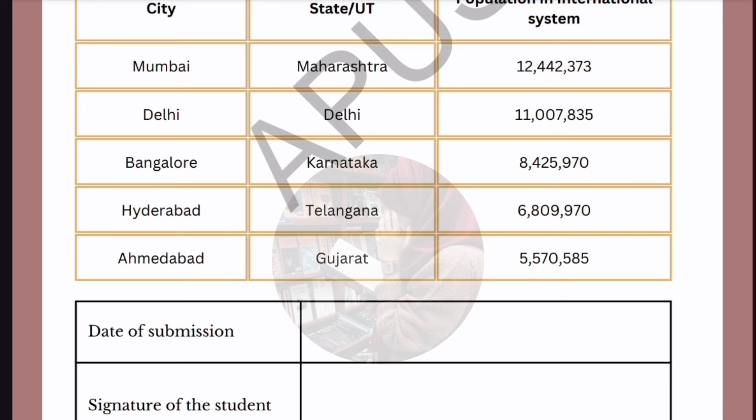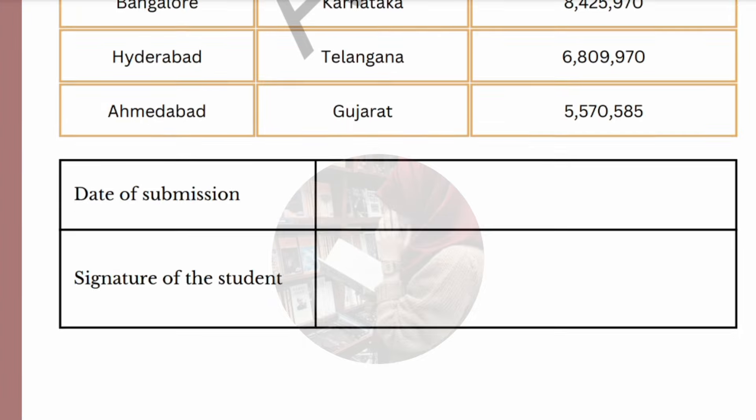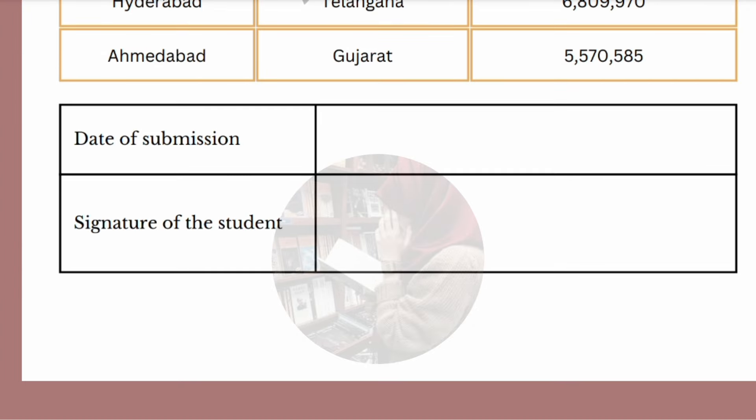Next is Bangalore, state Karnataka, population 84 lakhs 25,970. Then Hyderabad, state Telangana, population 68 lakhs 9,970. The last one is Ahmedabad, state Gujarat, population 55 lakhs 70,585.